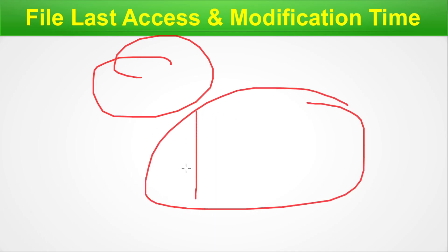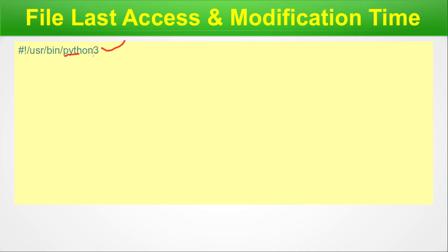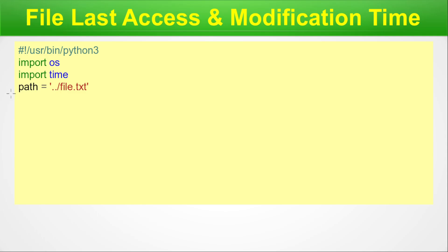Next: file last access and modification time. This is very important — if a file was modified six months ago we don't want it; we need the file processed just last week. We are doing EDA automation, so the code should check this intelligently. First line is the interpreter, we import os. Note that OS-specific codes are not portable — whatever we write for Linux cannot be ported to Windows.